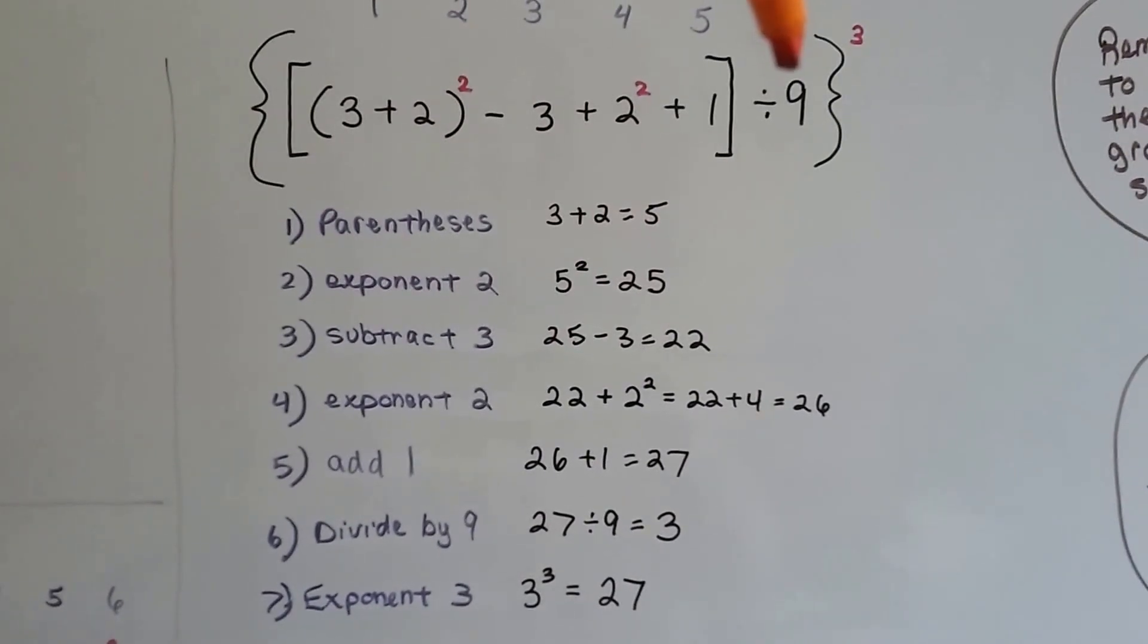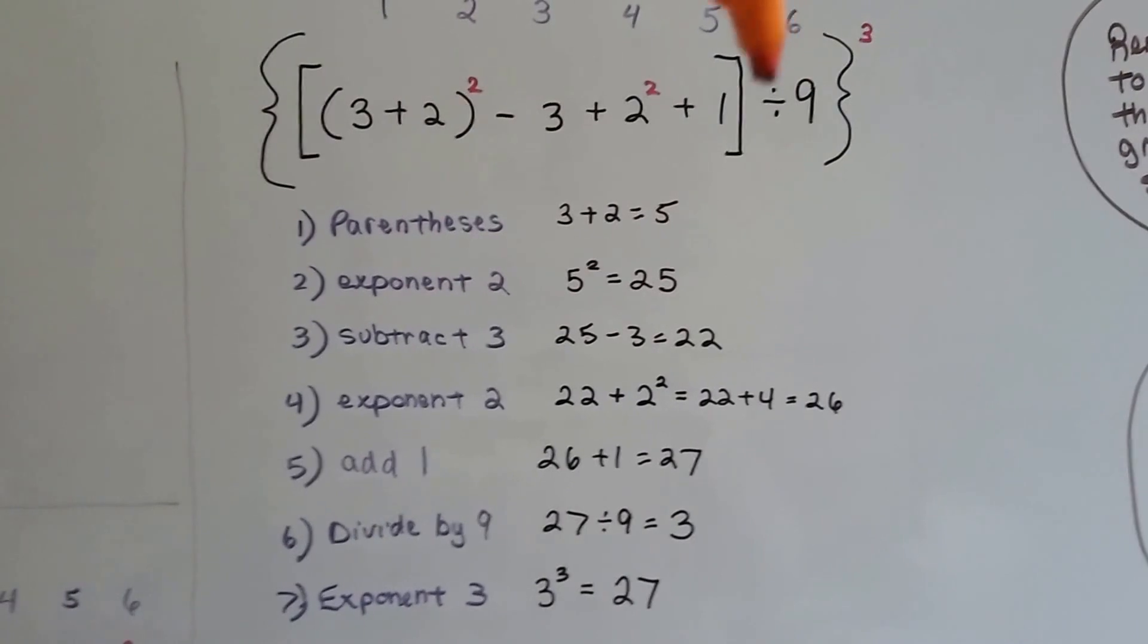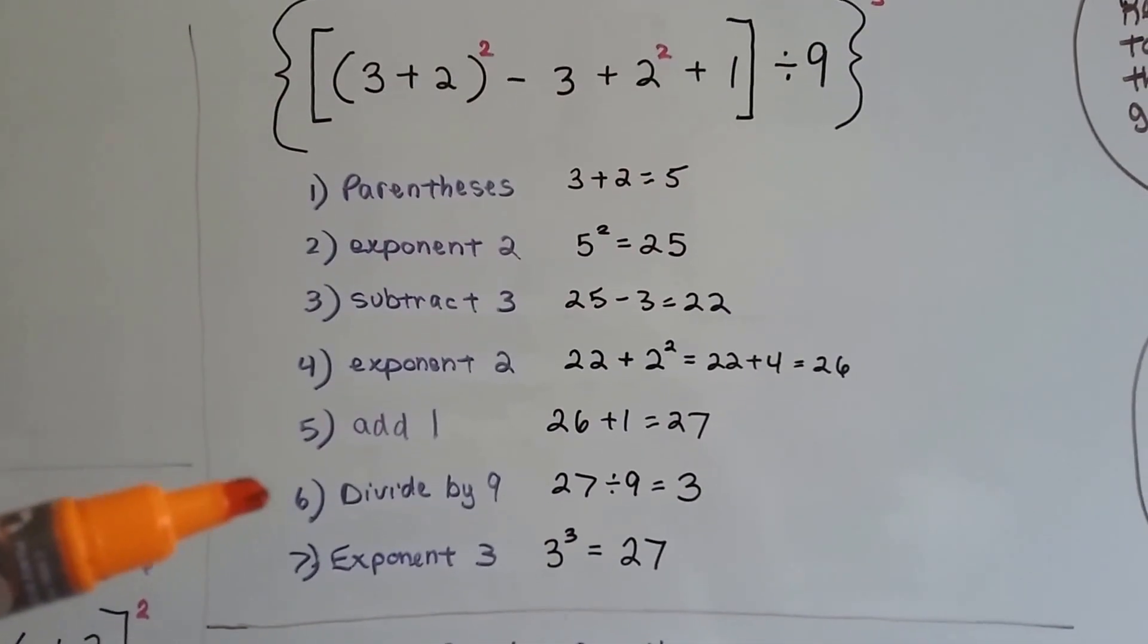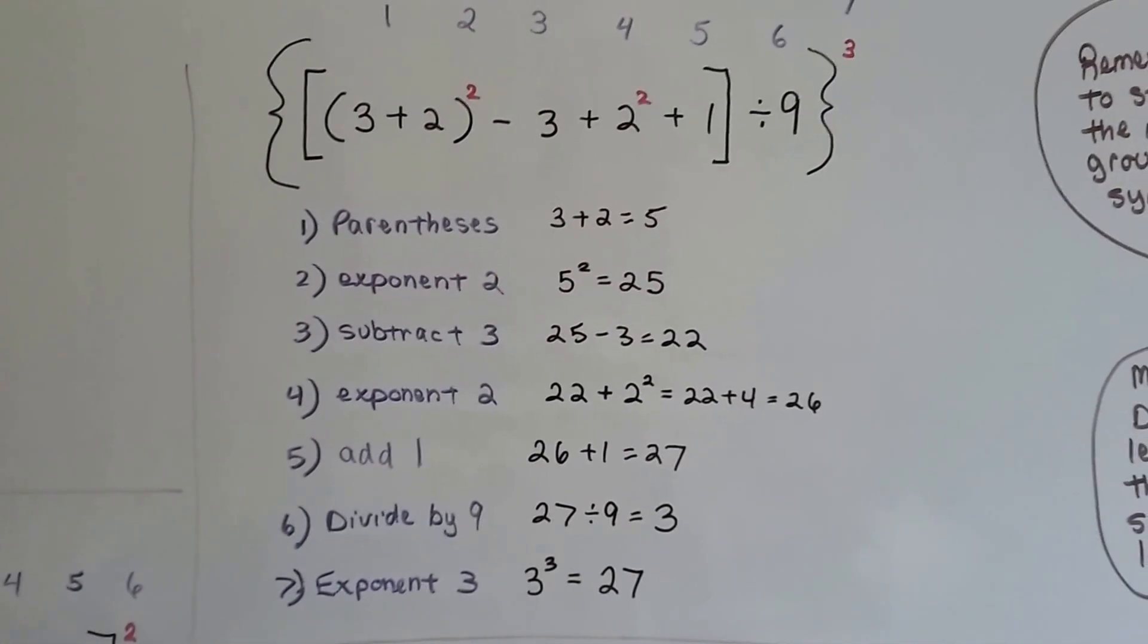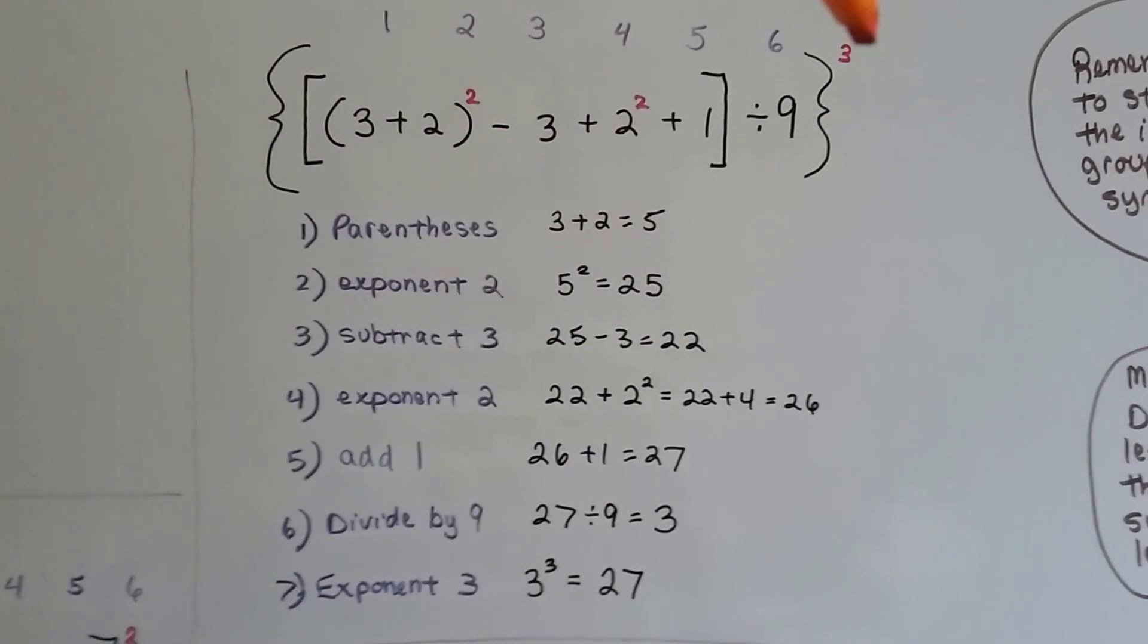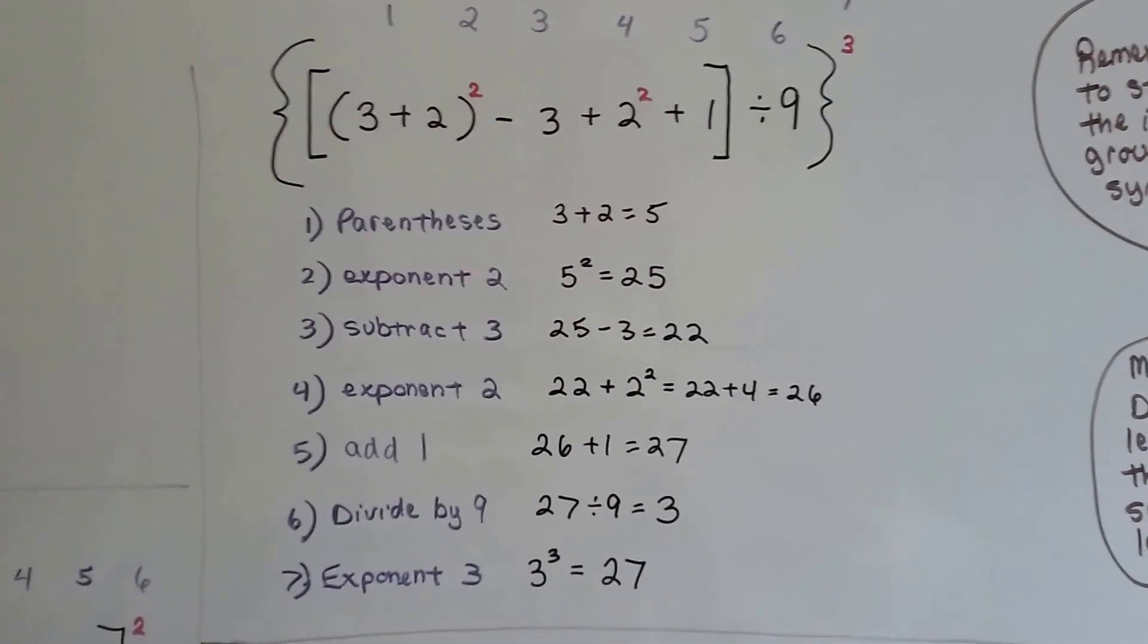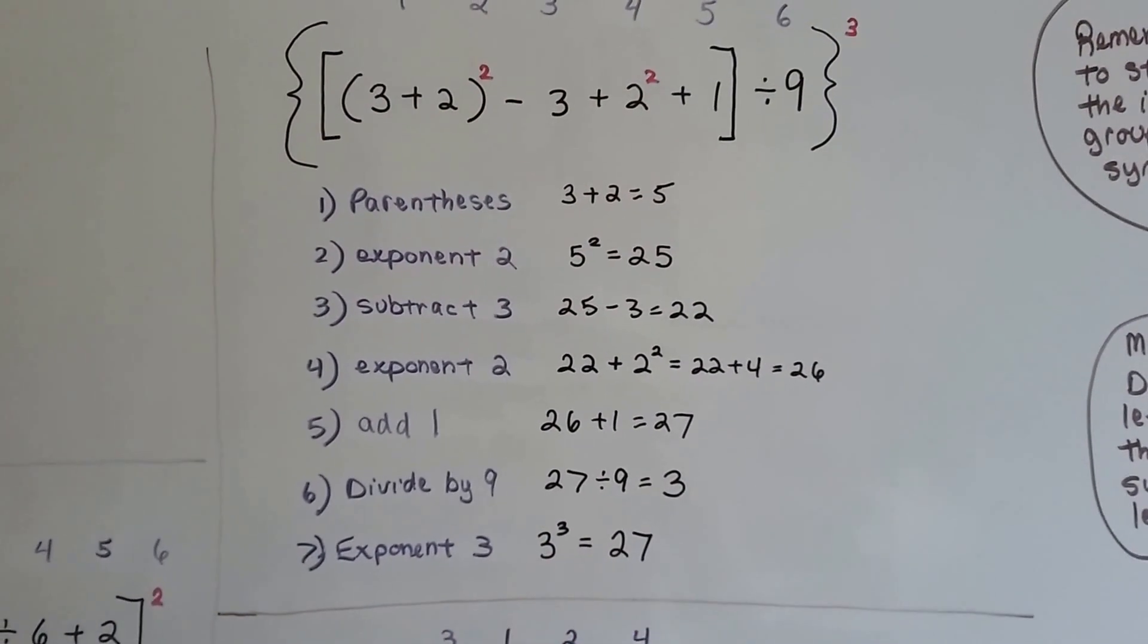Now we're outside the bracket. We did everything inside the parentheses and the brackets. Now we're inside the braces here. So step 6 is dividing by 9. 27 divided by 9 is 3. And now we do this little 3 exponent on the very outside of the braces, the curly braces out here. We're going to do that last. And 3 to the third power is 27.